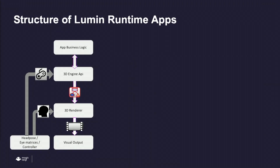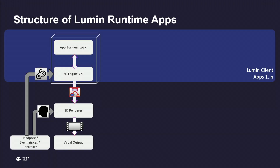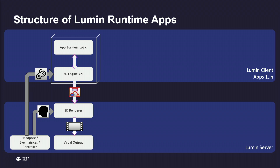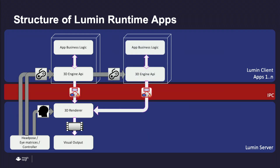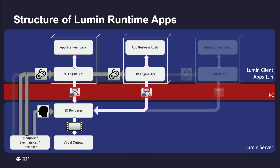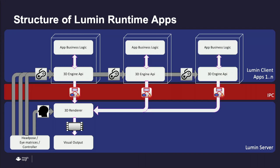What we did for Lumen Runtime is split the business logic — let apps run in one layer. Then we let the Lumen server take care of the rendering, and the scene graph is communicated from each app to the server. When you want multiple 3D apps, we basically have all the scene graphs going to the renderer. That's how we did it.